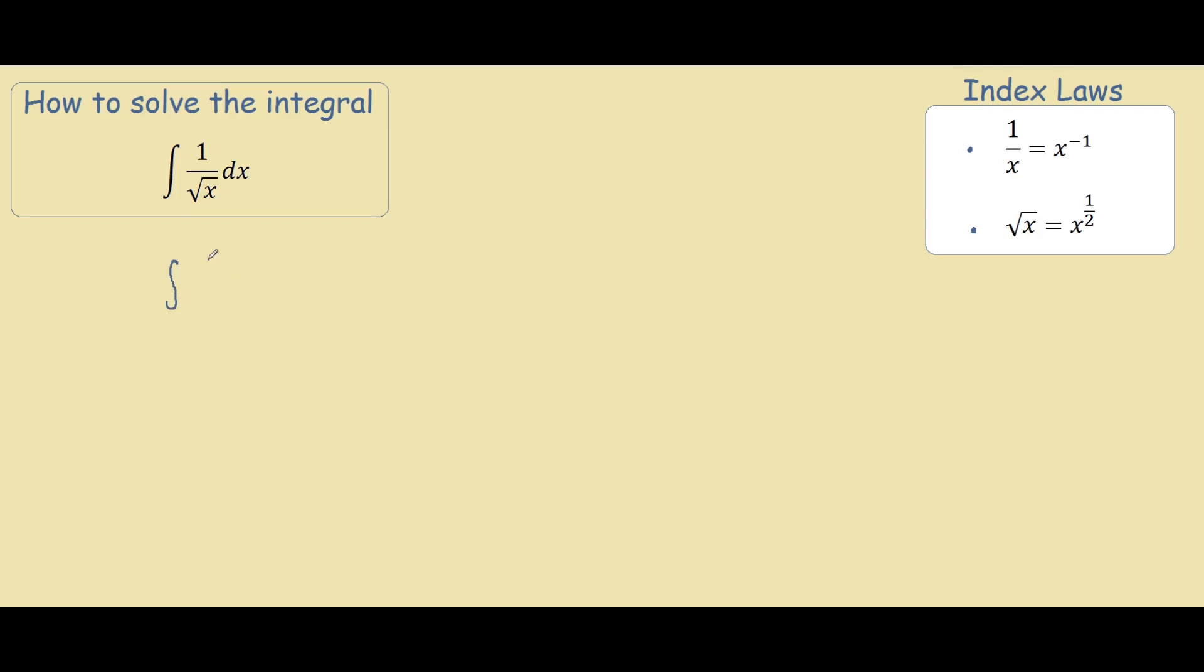So our first step, 1 divided by square root of x is actually the same thing as x to the power of half dx. And we also know that 1 divided by x is the same thing as x to the power of negative 1.